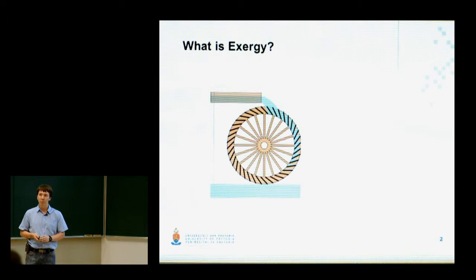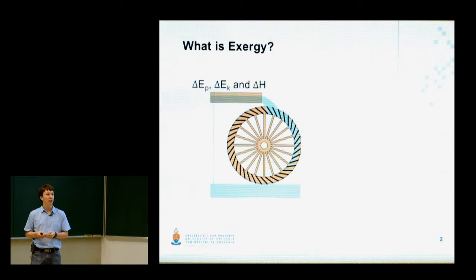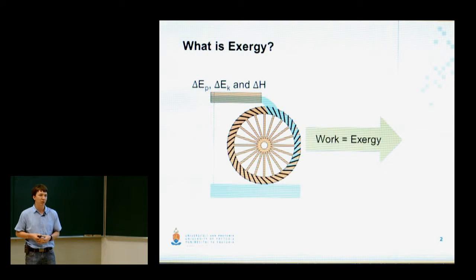The water on top has potential energy, kinetic energy, and also an enthalpy value. If I let this water flow over the water wheel it will do work. Now if the water on the top of the wheel has more energy, the more work I will be able to obtain. This is a neat way of summarizing the energy content of this process stream.